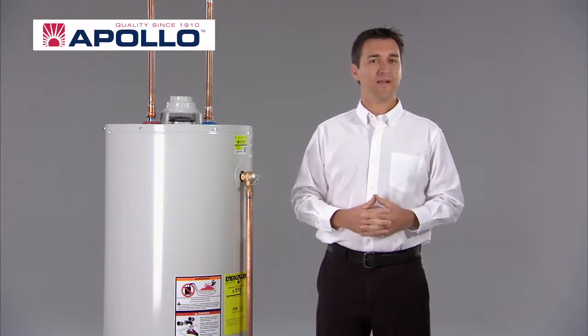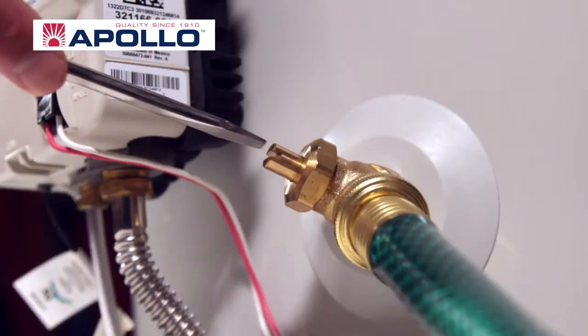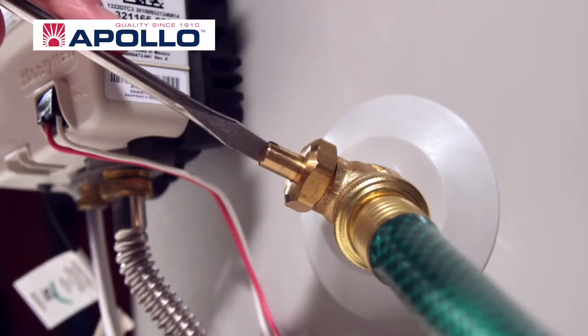Finally, place the other end of the hose in a floor drain and open the valve. Let all the water drain out of the tank.